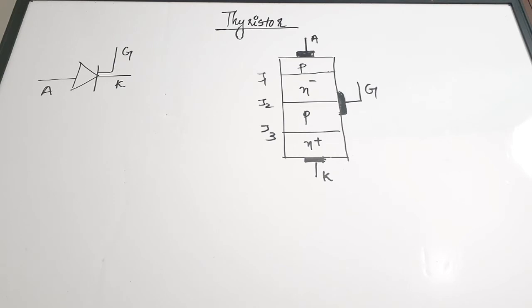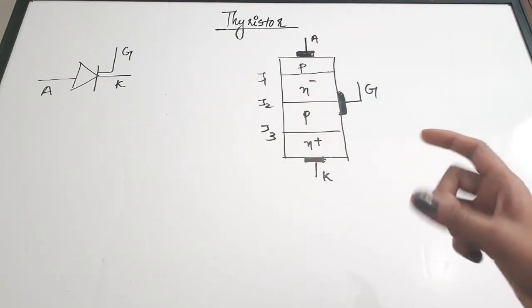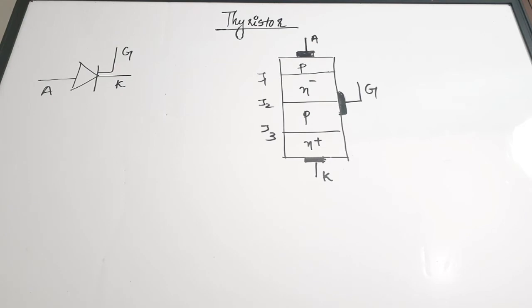An important feature of thyristors or SCRs is that they are inherently slow switching devices. They can only be used for low switching frequency applications and cannot be used for high frequency switching. In comparison with BJTs and MOSFETs, the switching time is more. They also have a large reverse recovery current. These are the key features of a thyristor.